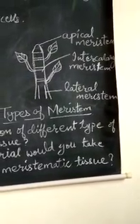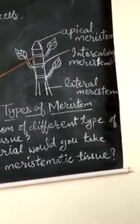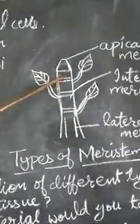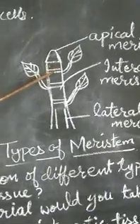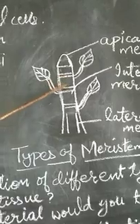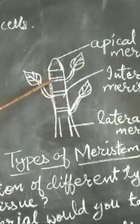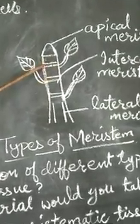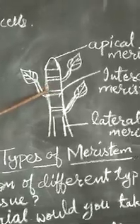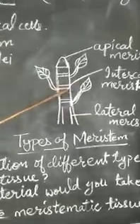Before going to explain about intercalary meristem, first I want to explain about nodes. Nodes are certain spaces or sections in a plant which contain dense or compact cells. These nodes are responsible for the growth of plant in length. The distance between two nodes is called inter-node. This intercalary meristem is present at the base of node.